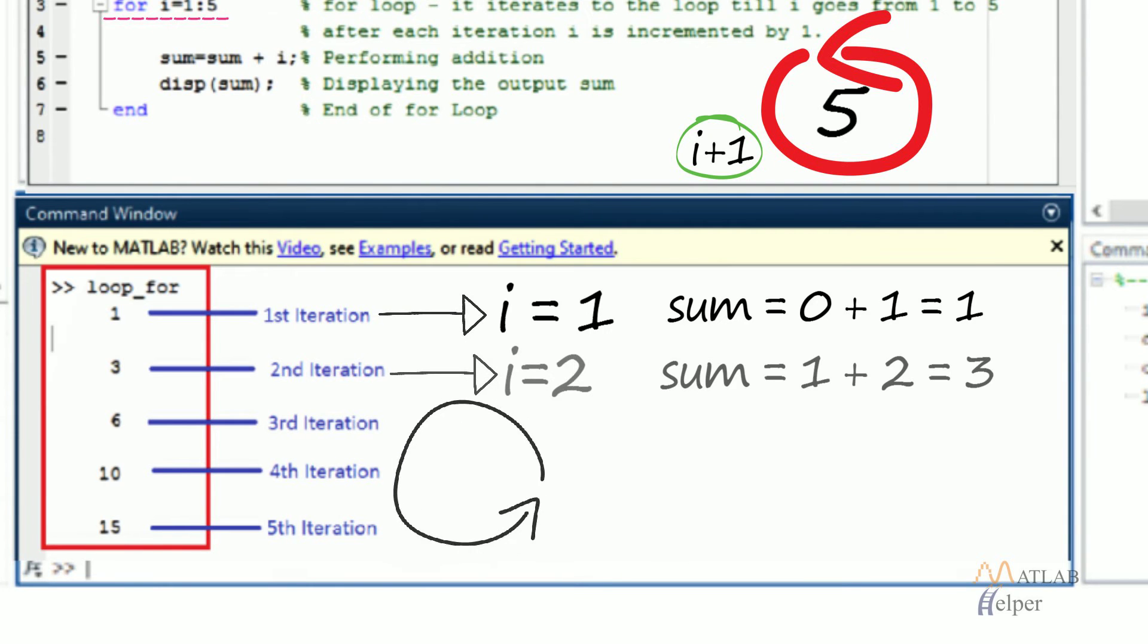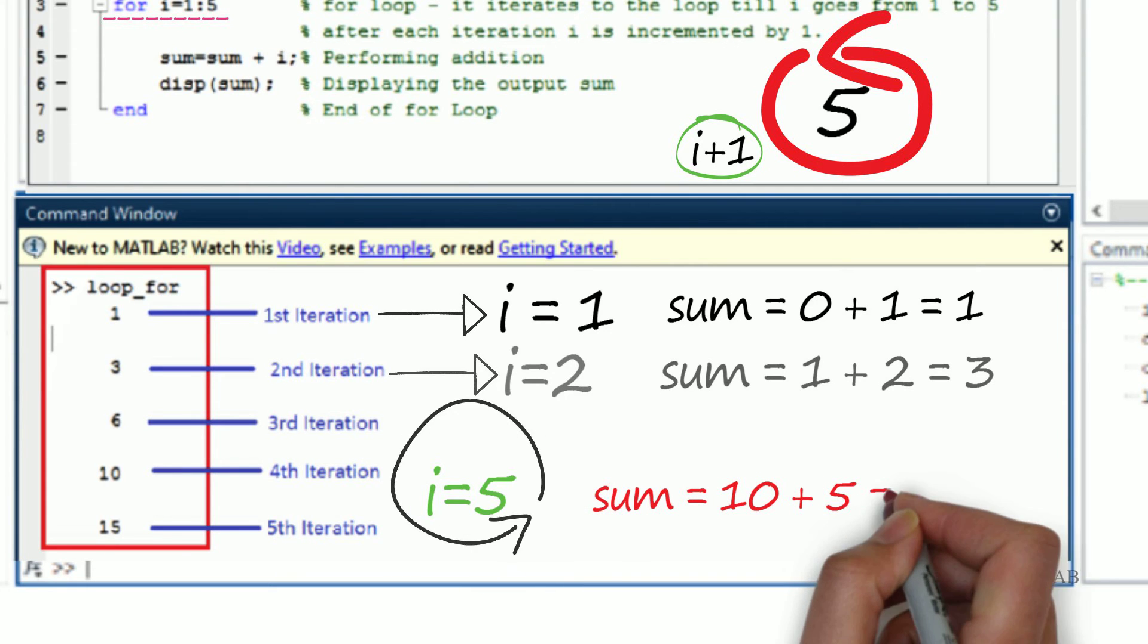The loop continues till the value of i becomes 5. So sum is equal to 10+5=15.